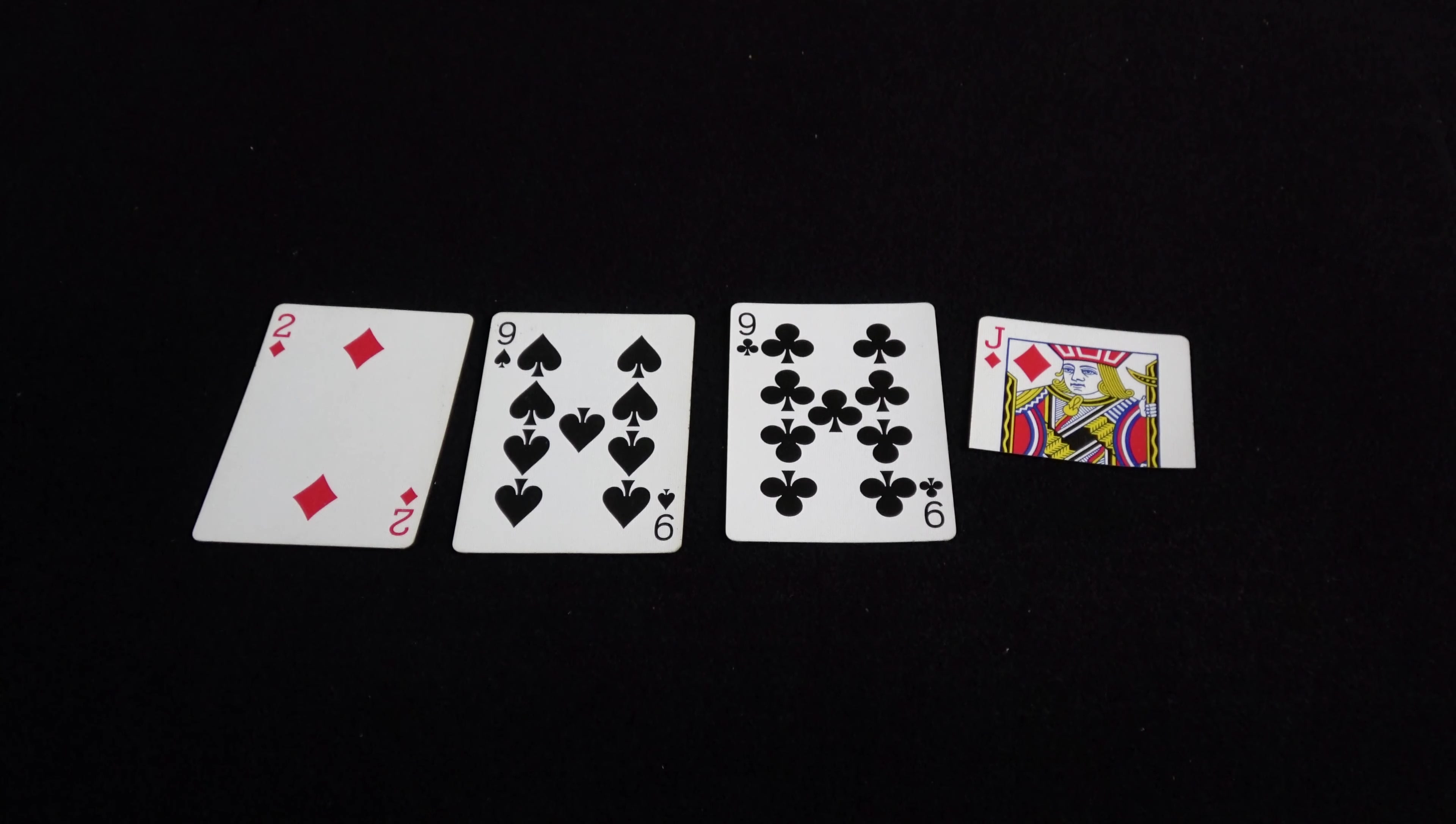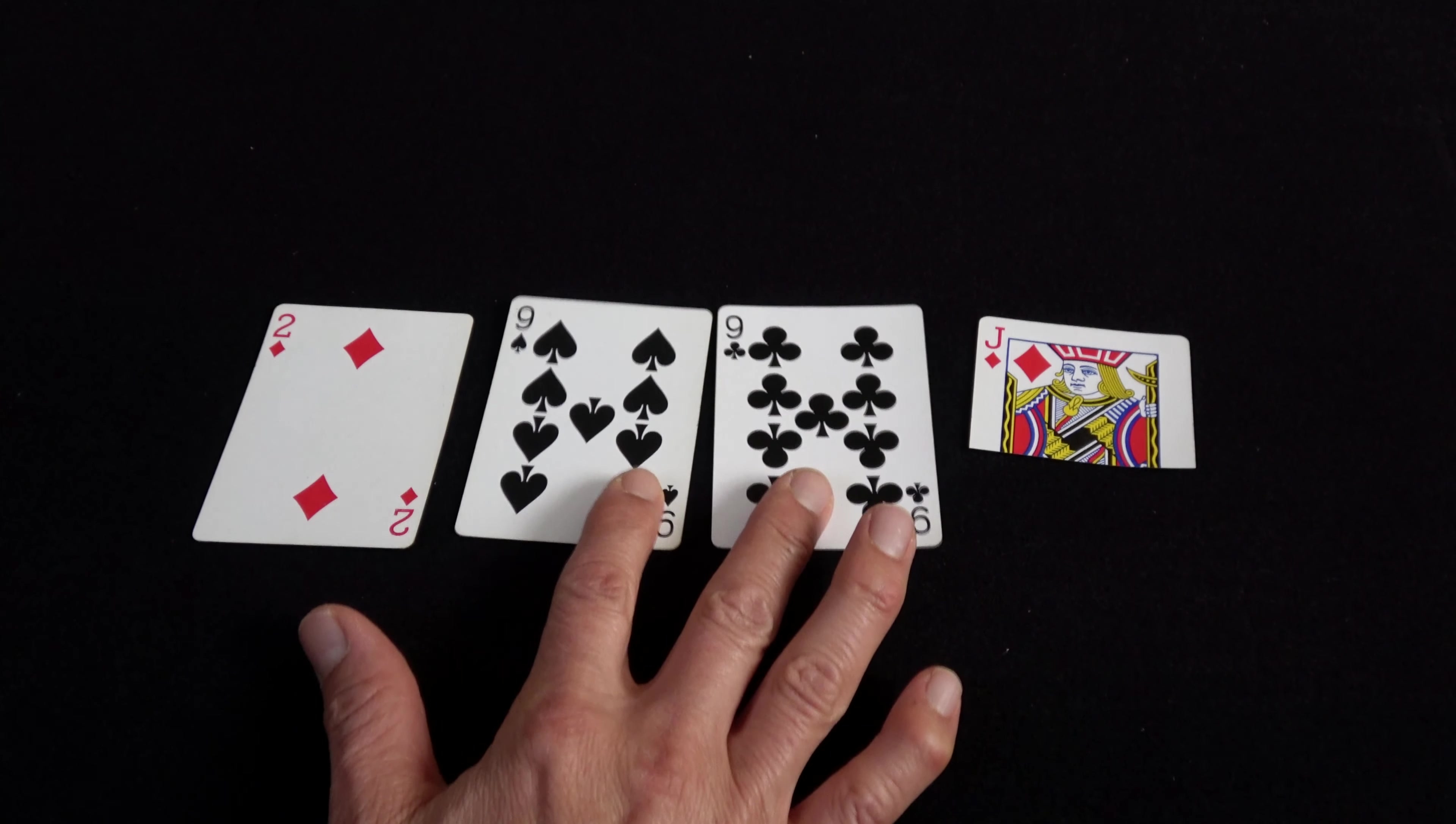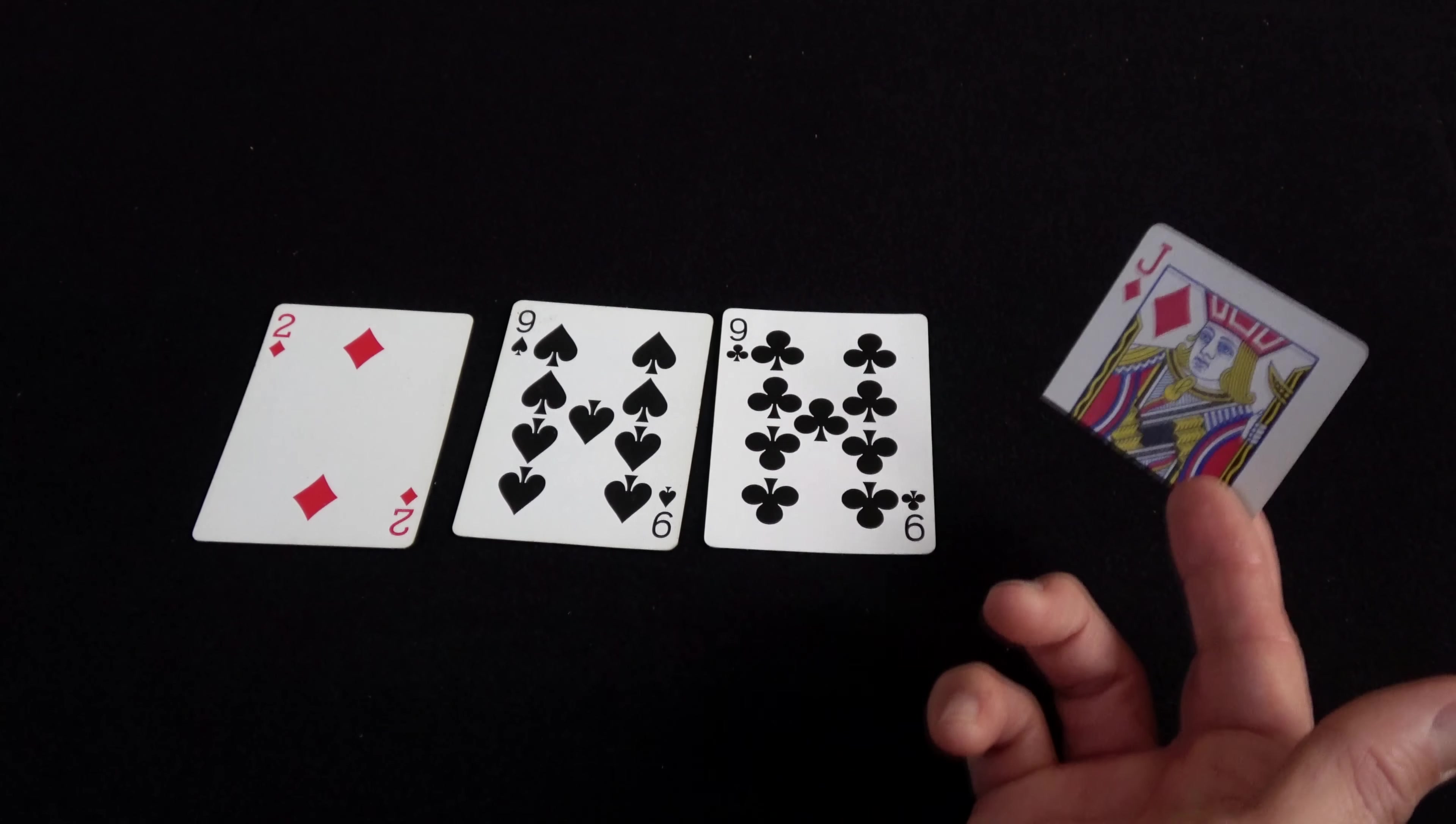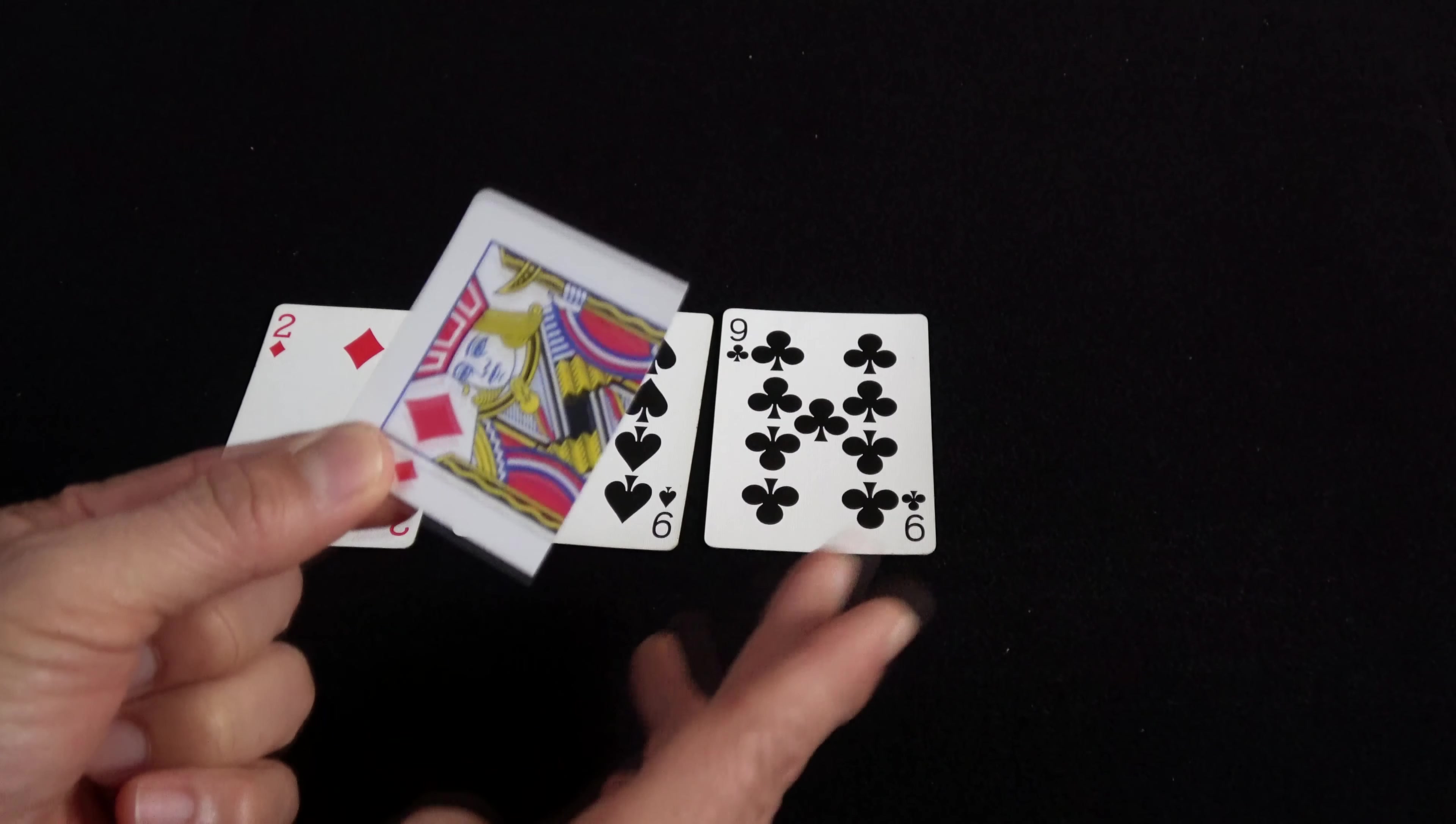For this trick you're going to need four playing cards and you're going to be creating a gimmick. Now I always think it's good to have contrasting cards here. You'll notice I have the two black nines and then I have a part of a jack, in this case a jack of diamonds. It's nice to have numbered cards versus a face card for contrast.